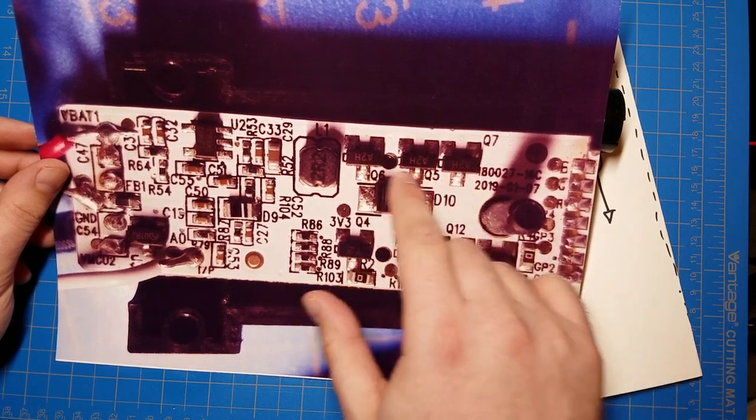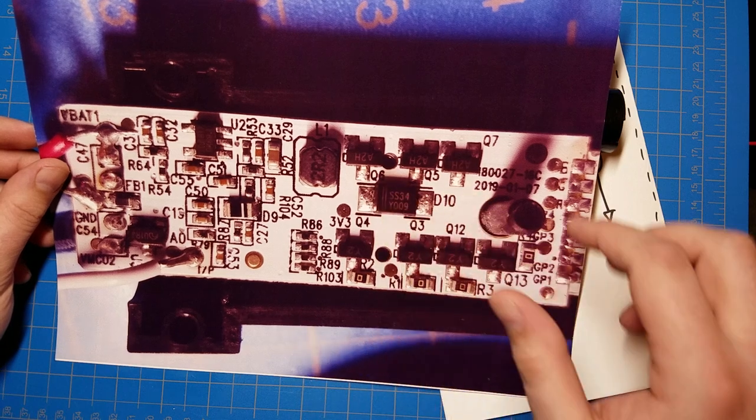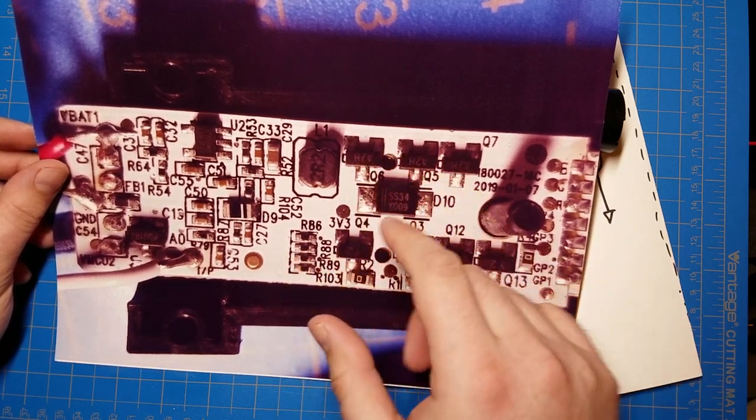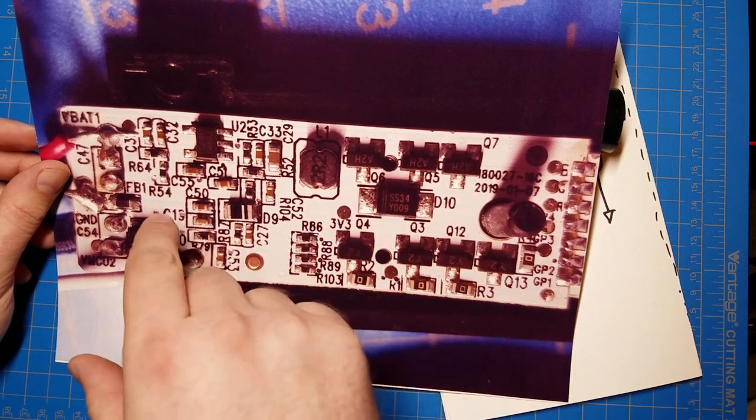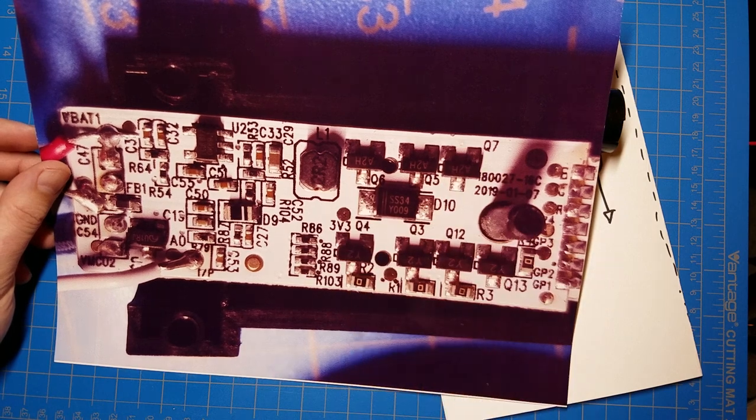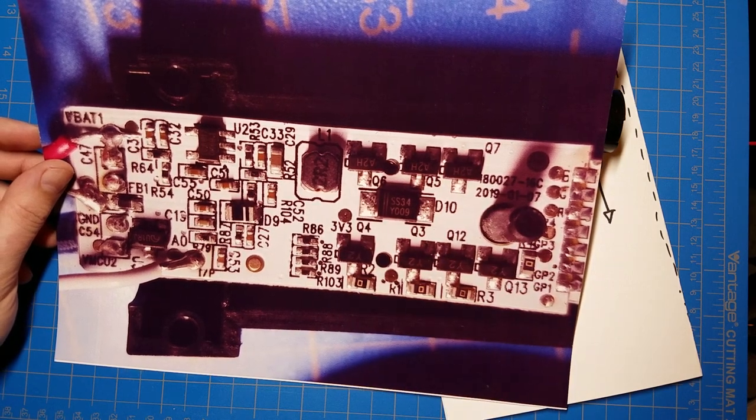So these three MOSFETs, one for each color here, control what colors turn on and off. There's a control pin here for each of these MOSFETs that connects back to the microcontroller. The microcontroller determines which one of these or all three of these turn on or off to give you the different colors.